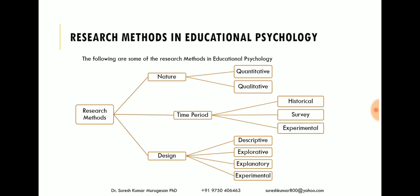Here we look into research methods. Based on the nature, research can be classified into quantitative and qualitative. Based on the time period, it is classified into historical, survey and experimental. A research that answers the question 'what happened' is historical study; a research that answers 'what is happening' is survey; and what will happen in the future is answered by experimental research. Based on the design, we can classify into descriptive, exploratory, explanatory and experimental.